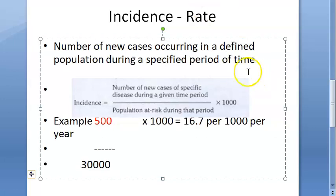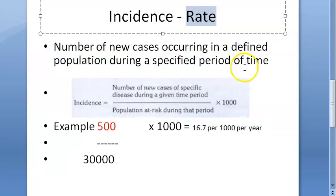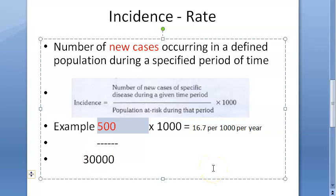So that becomes the incidence rate — remember it's a rate. These 500 are new cases. They are new cases during a given period of time in a specified population or population at risk. It refers to new spells or episodes of disease over a period of time, per thousand population.